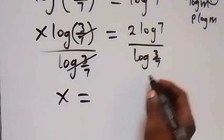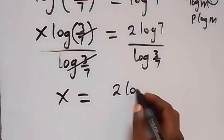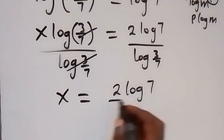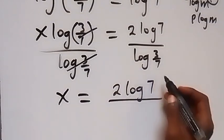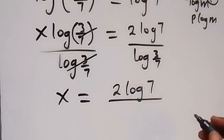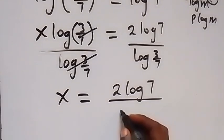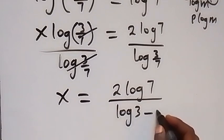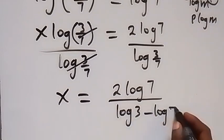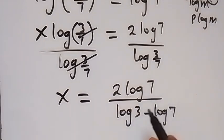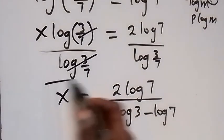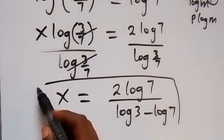Here we can also separate this using the quotient law of logarithms. We can write it as log 3 minus log 7. Here we can get the value of log 7 and log 3. When we substitute here, we get an approximate solution.